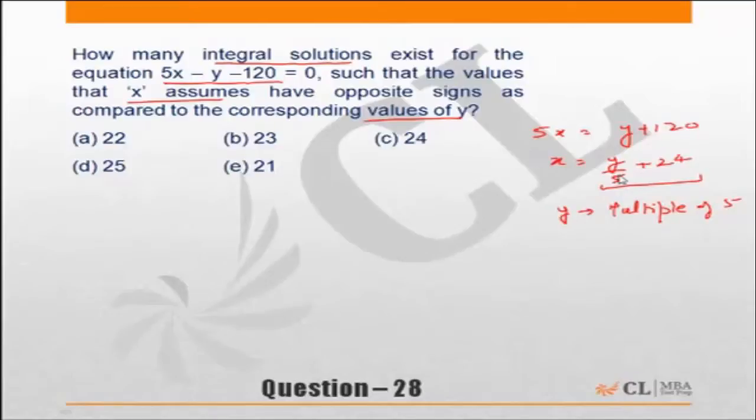For example, if y is 7, then y/5 is 1.4 and x will not be an integer. So the first thing is y has to be a multiple of 5.